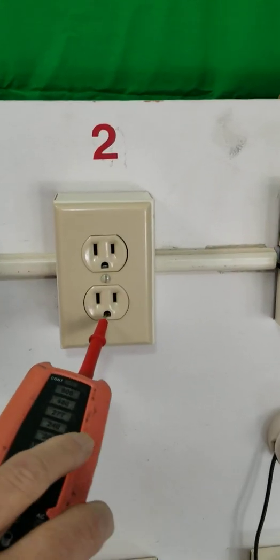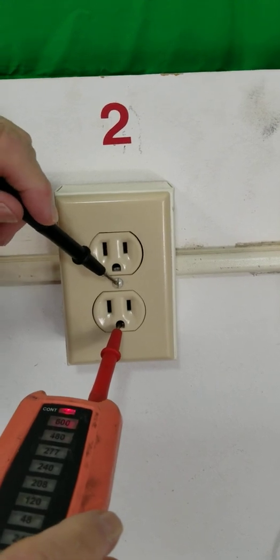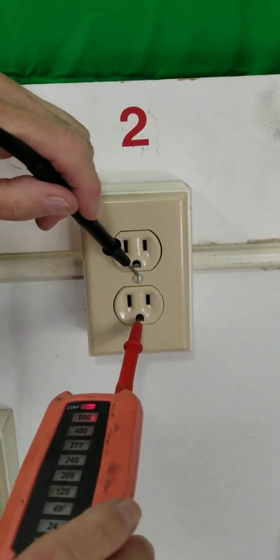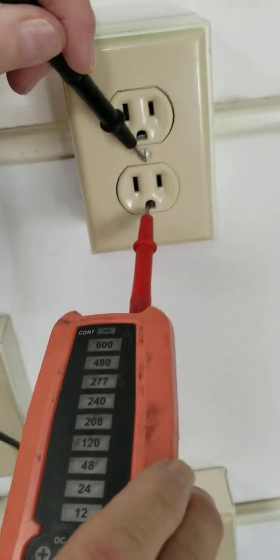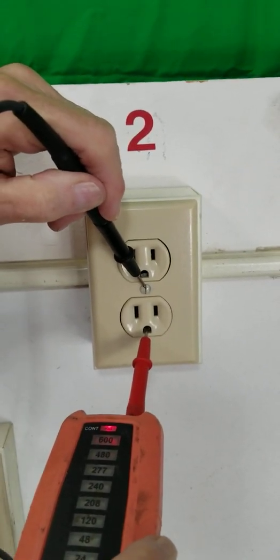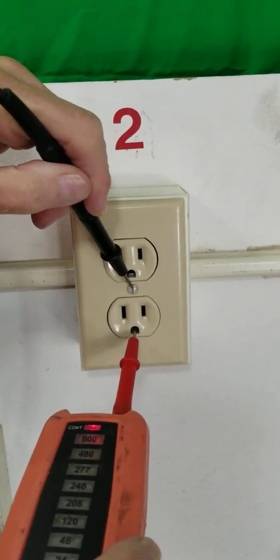Now if I go from ground to the yoke, it's showing that I have what's called continuity. This ground and this screw are connected together through the yoke of the receptacle.